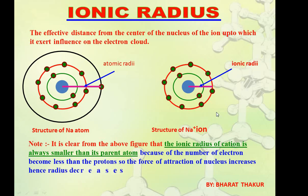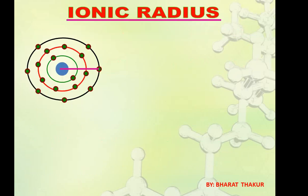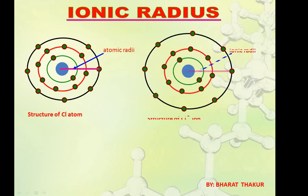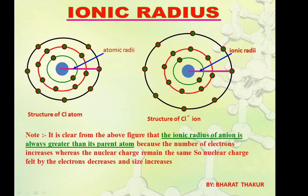Why is the cation smaller? Because the number of electrons becomes less than the number of protons, so the force of attraction of the nucleus increases and the radius decreases. But if an atom gains an electron — for example Chlorine with 17 electrons and 17 protons — when it gains one electron, electrons become 18 but protons remain 17. The nuclear charge felt by all electrons decreases, the electron cloud expands, and size increases. The ionic radius of an anion is always greater than its parent atom because electrons increase while nuclear charge remains the same.